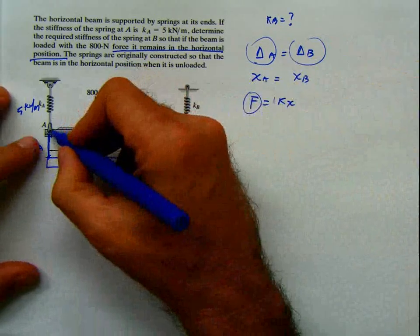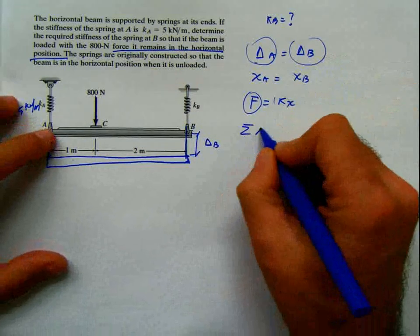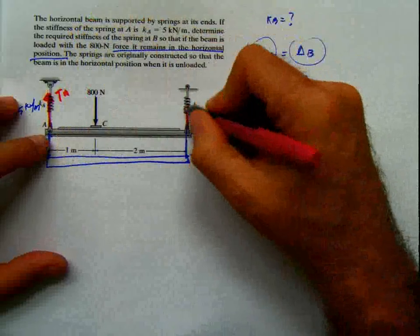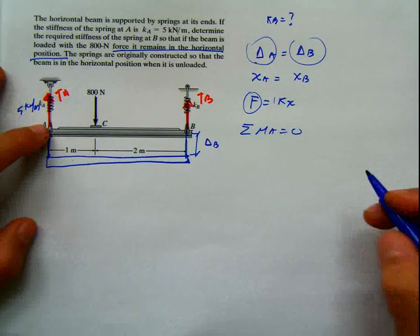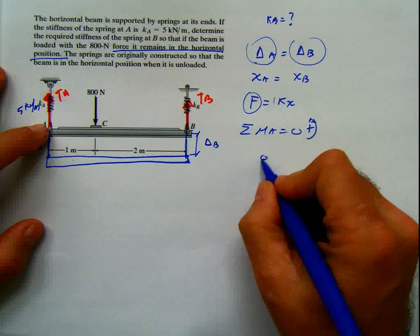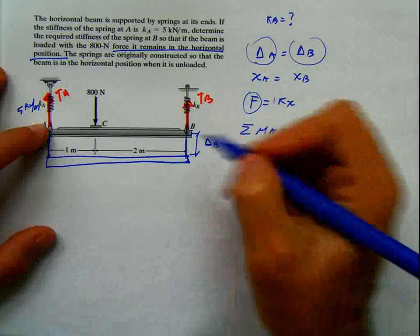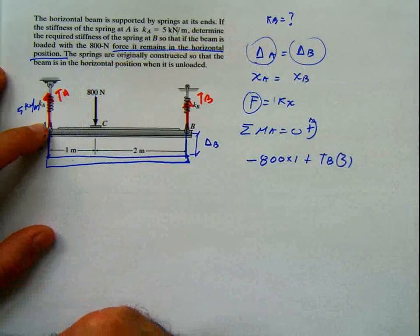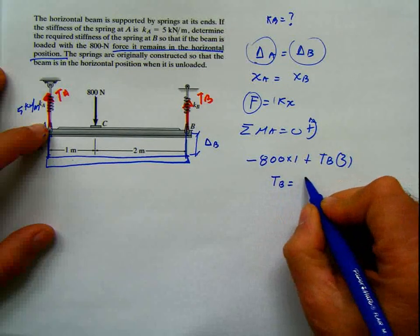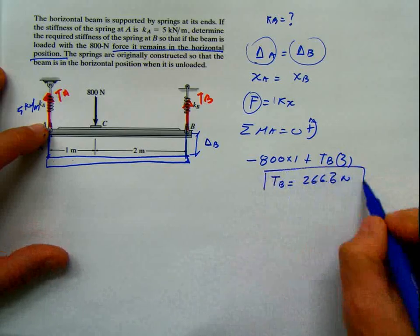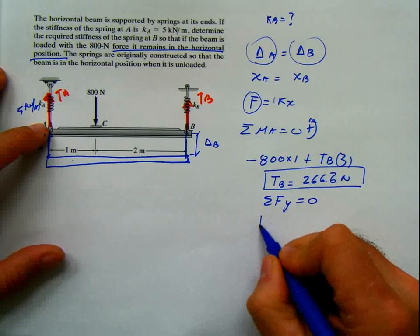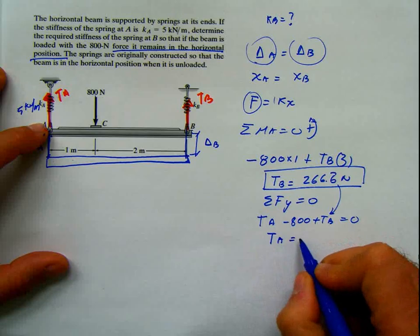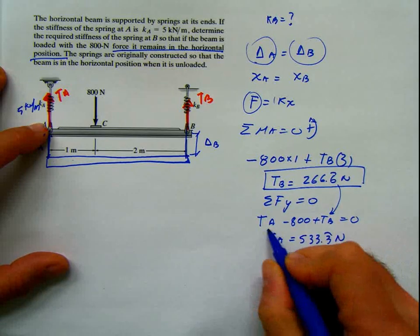I can find forces FA and FB by doing summation of moments at A equals zero. The springs give tension A and tension B. Taking counterclockwise positive: negative 800 times 1, plus TB times 3 equals zero — TB is positive because it acts upward. From here, TB equals 266.6 newton. Then summation of forces in y equals zero: TA minus 800 plus TB equals zero. Plugging in gives TA equal 533.3 newton.